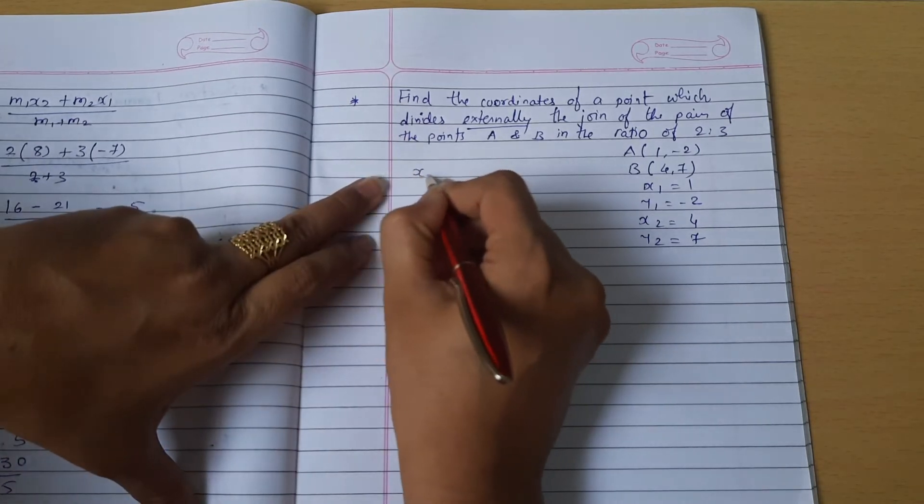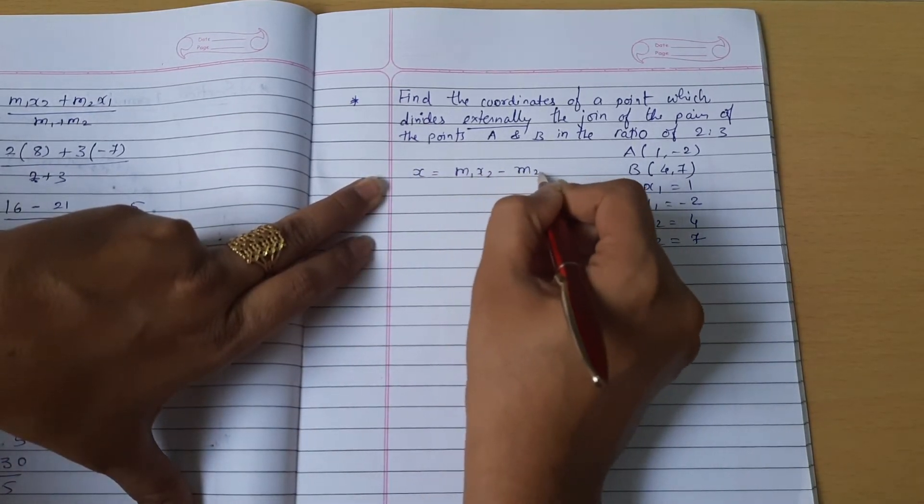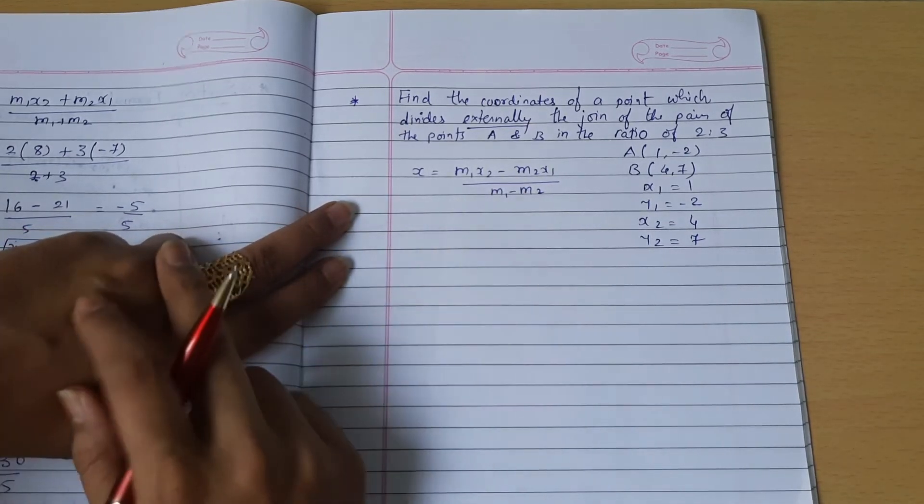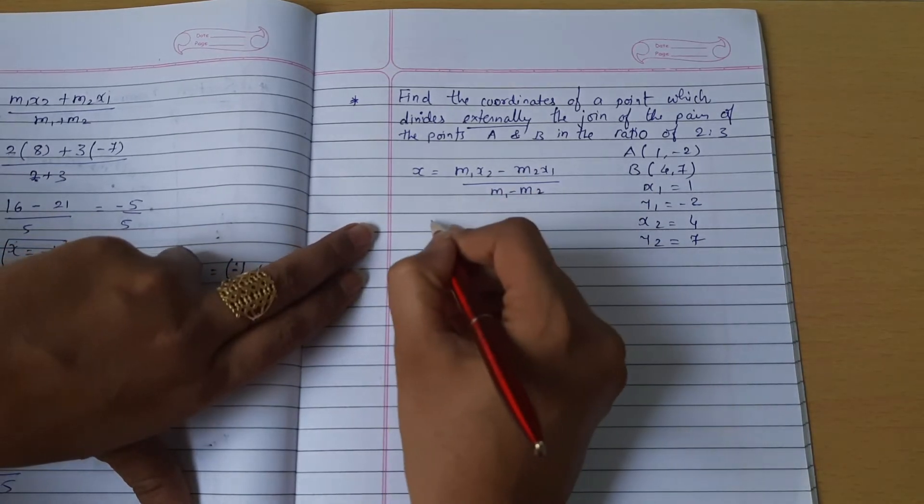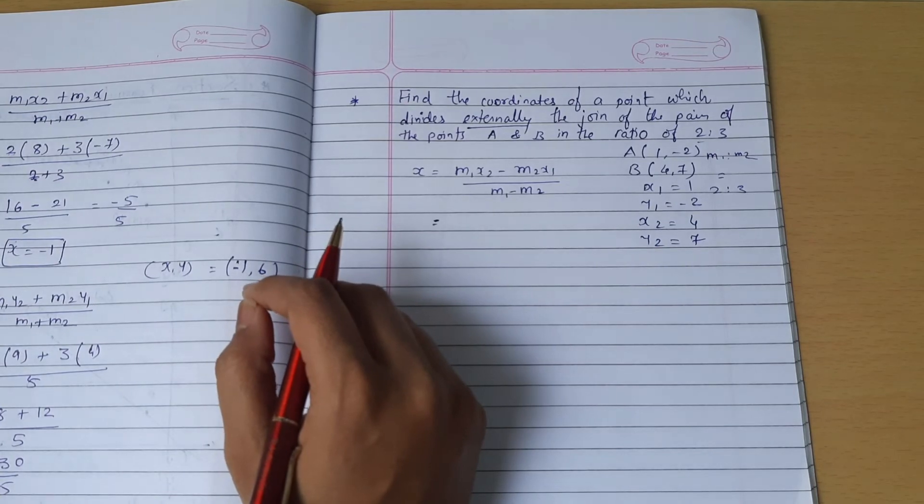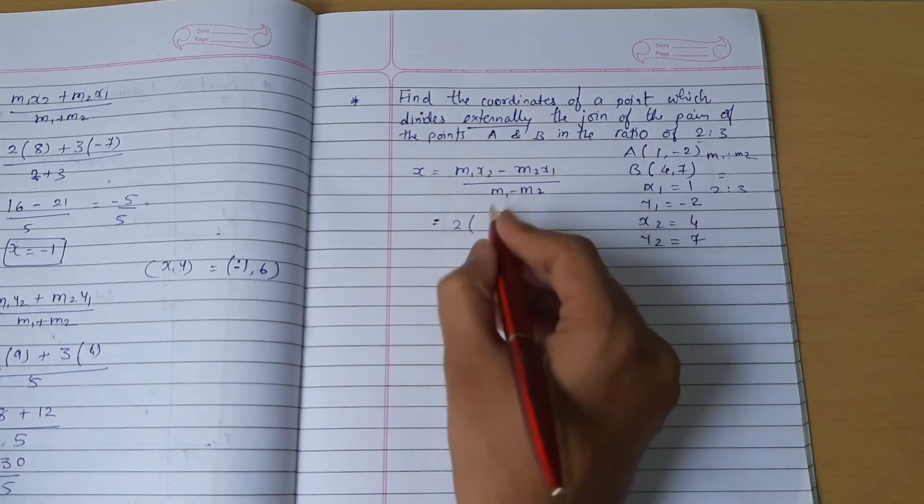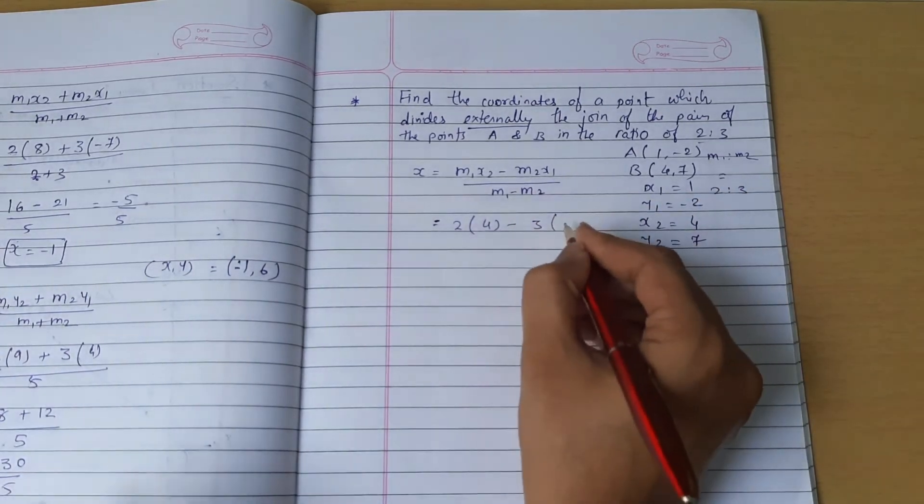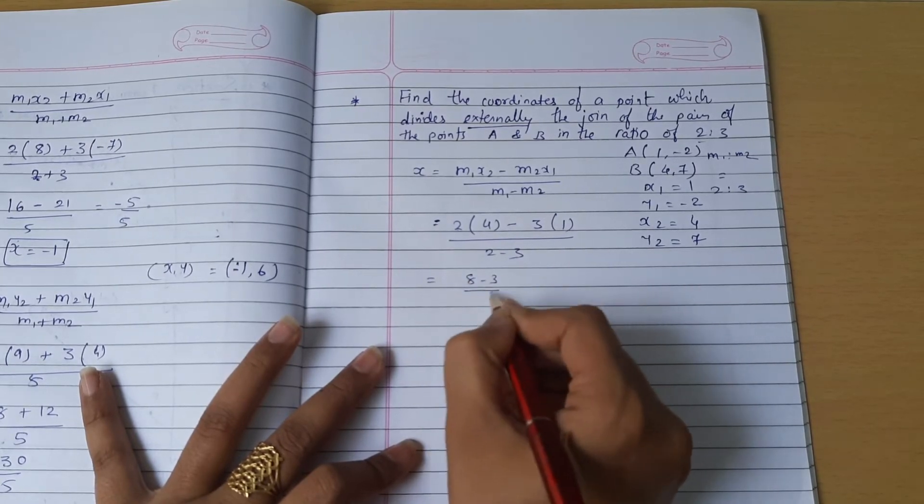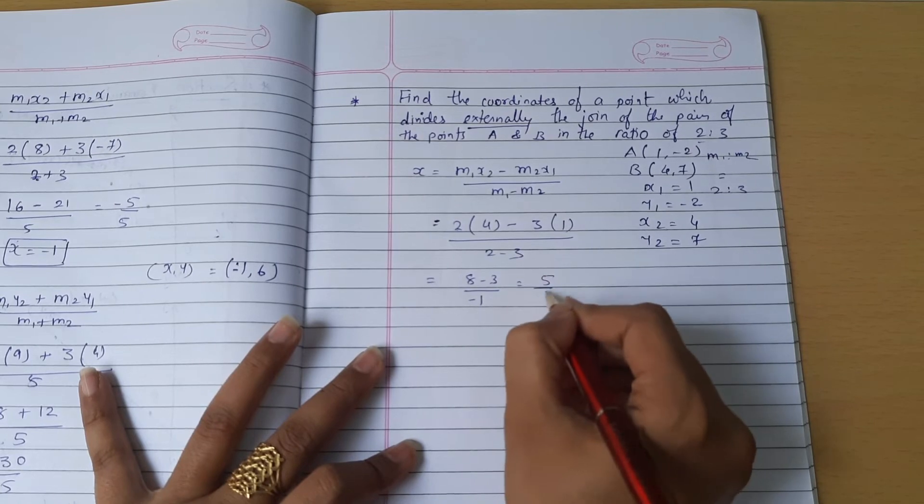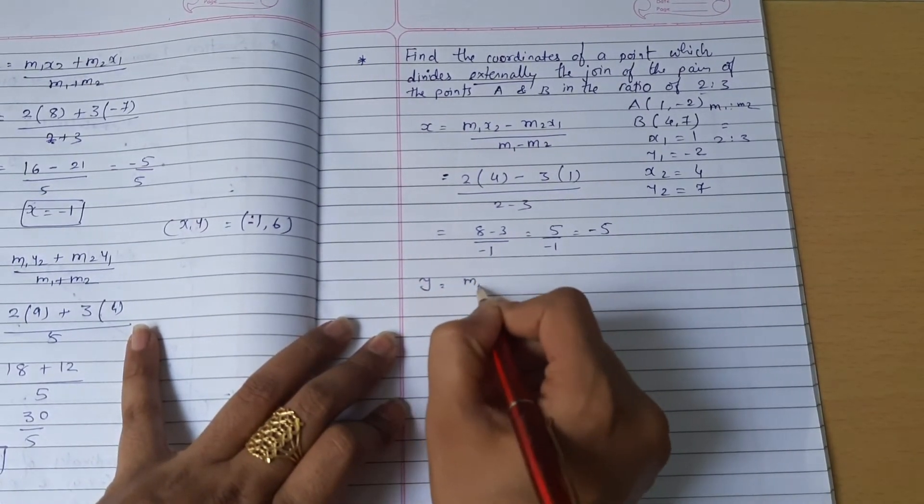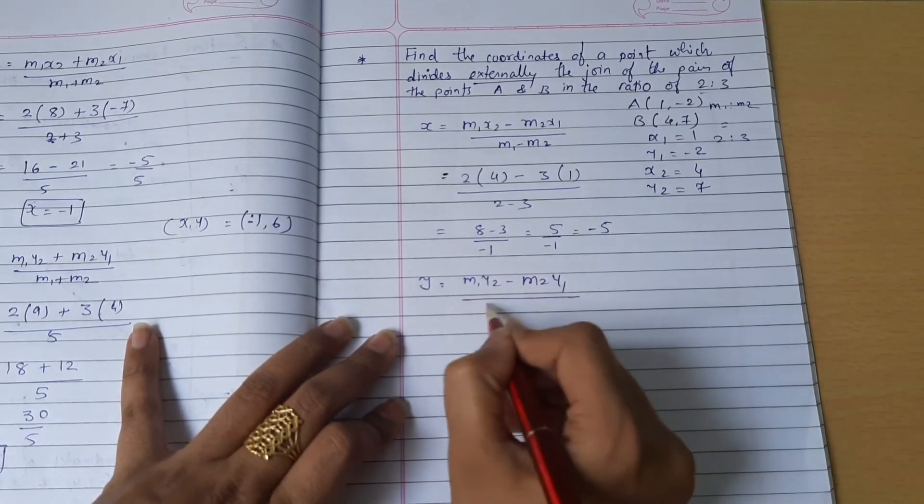According to the equation of external division, x equals m1 x2 minus m2 x1 divided by m1 minus m2, because the line divides externally. m1:m2 equals 2:3, so m1 is 2 and m2 is 3. 2 times 4 minus 3 times 1 divided by 2 minus 3. So this is 8 minus 3 divided by minus 1, this is 5 divided by minus 1, so that will be minus 5.